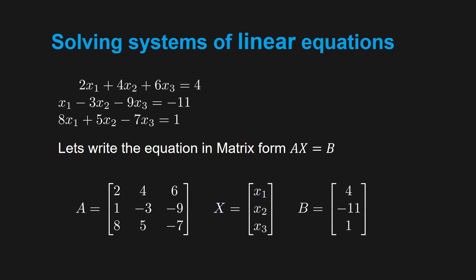Now we are going to use the SciPy module to solve a system of linear equations. We have three equations where x1, x2, x3 are the three unknown parameters. We can write these equations in matrix form Ax equals b, where A is the coefficient matrix on the left-hand side, x is the vector [x1, x2, x3], and b is the vector of values on the right-hand side.